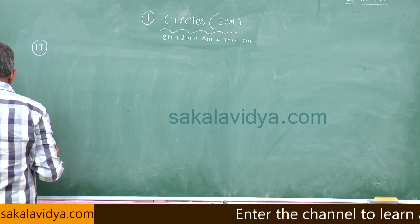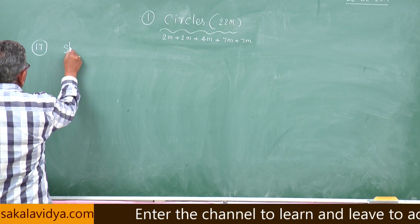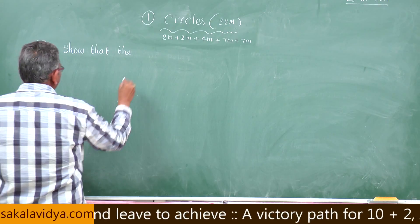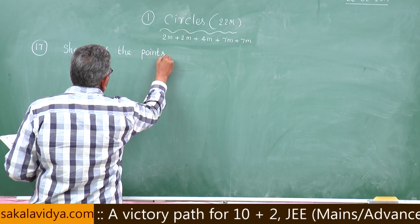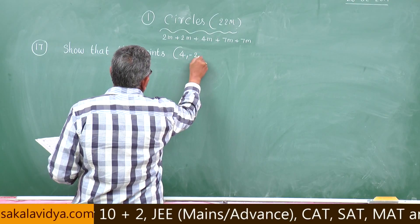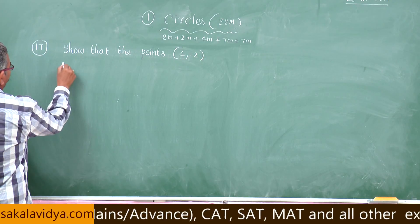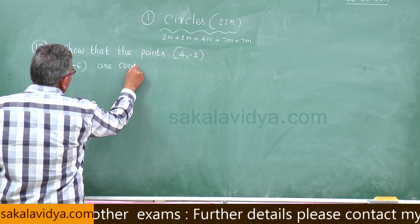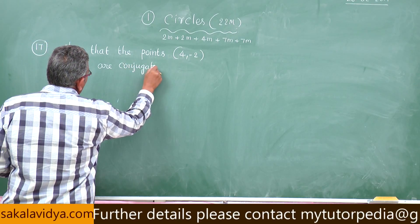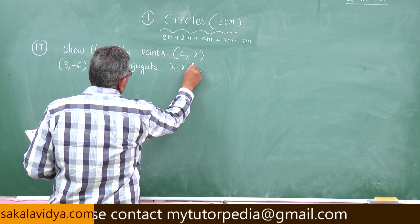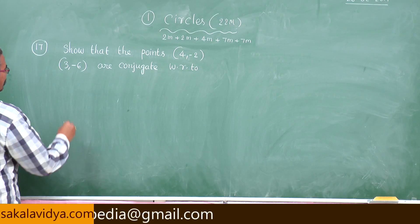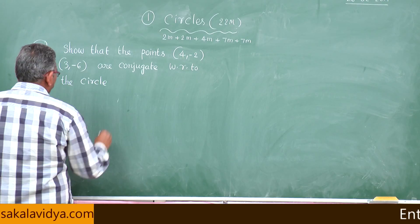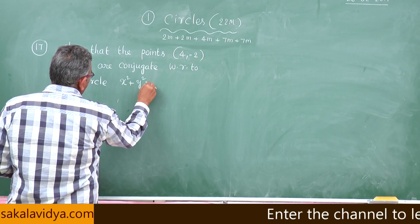17th problem: show that the points 4 comma minus 2 and 3 comma minus 6 are conjugate with respect to the circle x squared plus y squared is equal to 24.